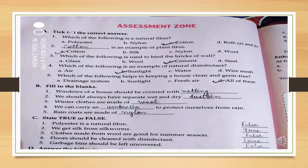Cement is used to bind the bricks of the wall - tick the answer cement. Fourth question: which of the following is an example of a natural disinfectant? Sunlight is a natural disinfectant, as we had studied. Options are air, sunlight, water, environment - mark the answer sunlight. Fifth question: which of the following helps in keeping a house clean and germ-free? Options are drainage system, sunlight, fresh air, all of these. The answer is all of these - all three are important for keeping a house clean and germ-free.